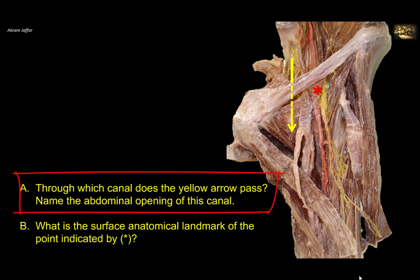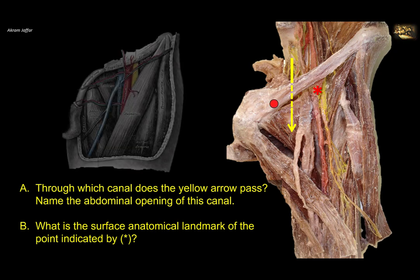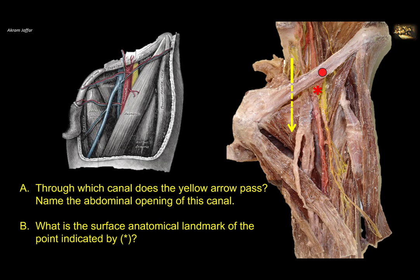Through which canal does the yellow arrow pass? Name the abdominal opening of this canal. Let's start identifying the region. This is the region of the femoral triangle. On the superior medial aspect of the thigh, you can see the base of the femoral triangle, which is formed by the inguinal ligament. And here is the apex of the femoral triangle, located down.